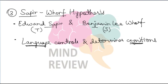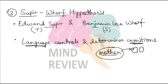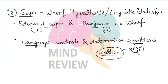For example, when I say the word 'mother' — how that language determines your cognition depends on what you are thinking about: your own mother, someone else's mother? Your language is controlling your cognition. This is what Edward Sapir and Benjamin Lee Whorf said. Their hypothesis also has another name: the Linguistic Relativity Hypothesis. If anyone asks this in a question, you should know it means that language is controlling your cognition.